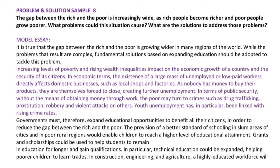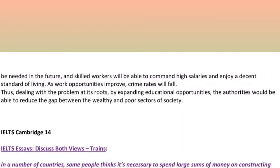The provision of a better standard of schooling in slum areas of cities and in poor rural regions would enable children to reach a higher level of educational attainment. Grants and scholarships could be used to help students remain in education for longer and gain qualifications. In particular, technical education could be expanded, helping poorer children to learn trades in construction, engineering and agriculture. A highly educated workforce will be needed in the future, and skilled workers will be able to command high salaries and enjoy a decent standard of living. As work opportunities improve, crime rates will fall.